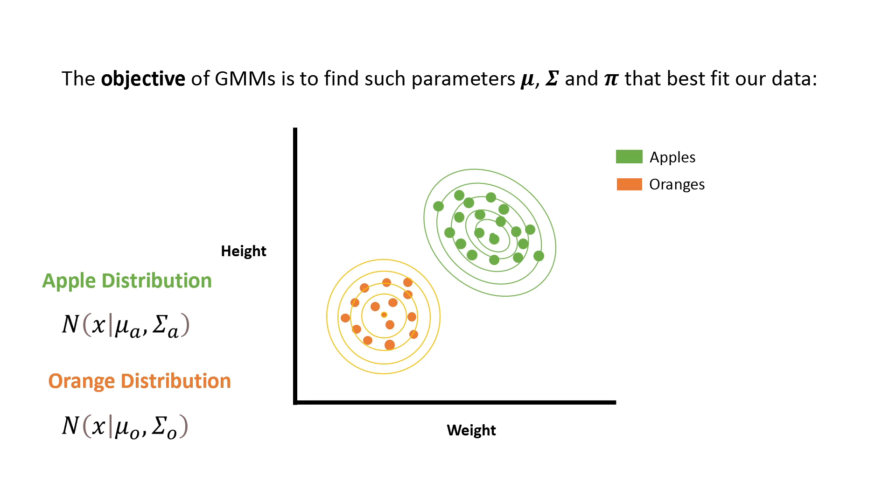Now what is pi? Pi is simply the probability of an observation belonging to an apple or an orange. So probability of apple here is given as pi_a and probability of orange as pi_o.